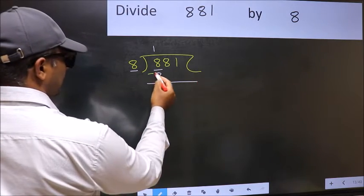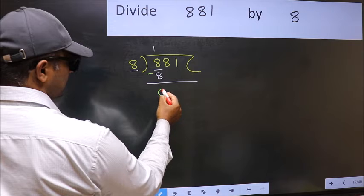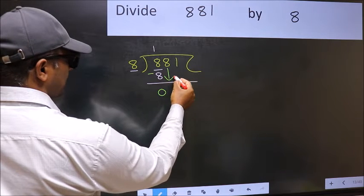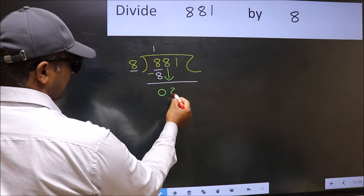Now we should subtract. 8 minus 8, 0. After this, bring down the beside number. So 8 down.